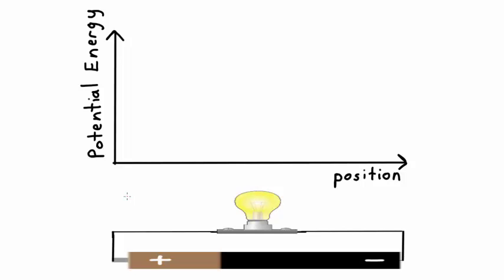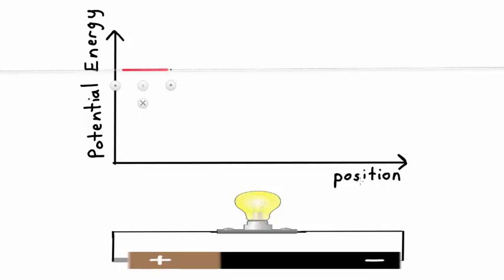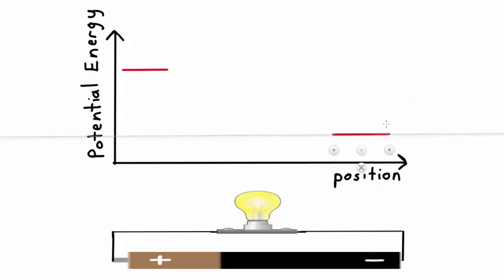Let's start with the left side of the wire. Charges at this point are directly connected to the positive terminal and so they will have a very high potential energy. When charges are at the other end of the circuit they are connected to the negative terminal of the battery and so they have very low potential energy. I've represented that with the red lines shown.